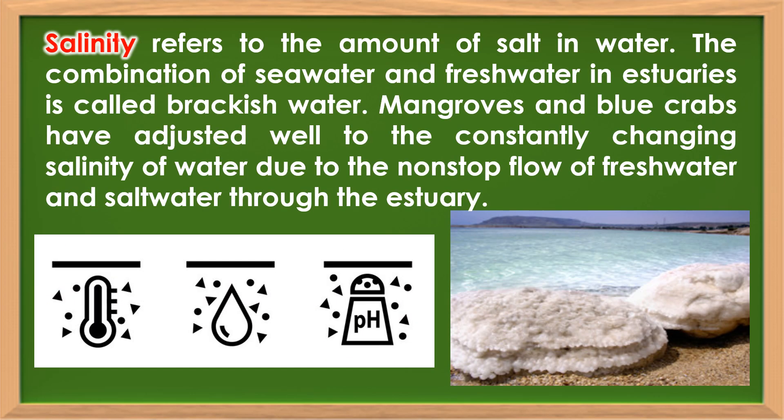Salinity refers to the amount of salt in water. The combination of sea water and fresh water in estuaries is called brackish water. Mangroves and blue crabs have adjusted well to the constantly changing salinity of water due to the continuous flow of fresh water and salt water through the estuaries.